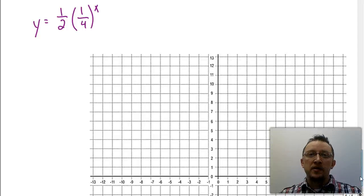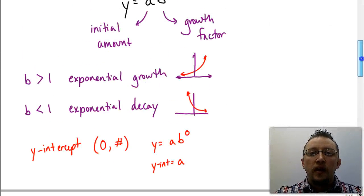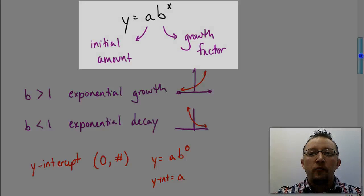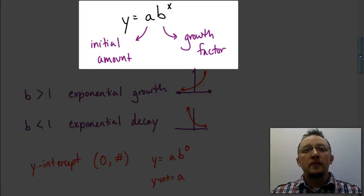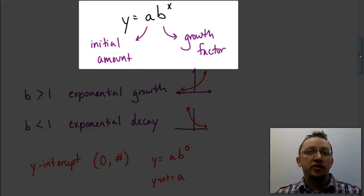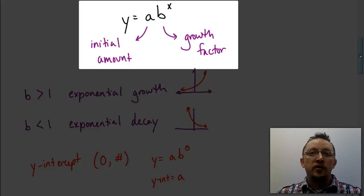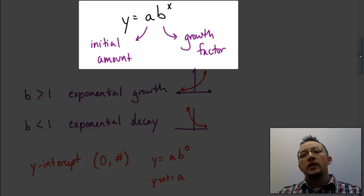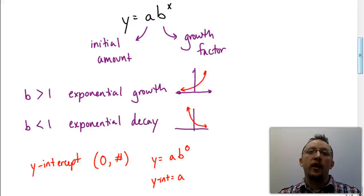Let's talk about some of those pieces we need to know first. Equations in the form y equals a times b to the x power are exponential equations, so the graphs of these are going to be unique. Remember that the value for a represents your initial amount — what you're starting out with. The value for b represents what we call our growth factor, and that growth factor is going to tell us a lot about the graph.